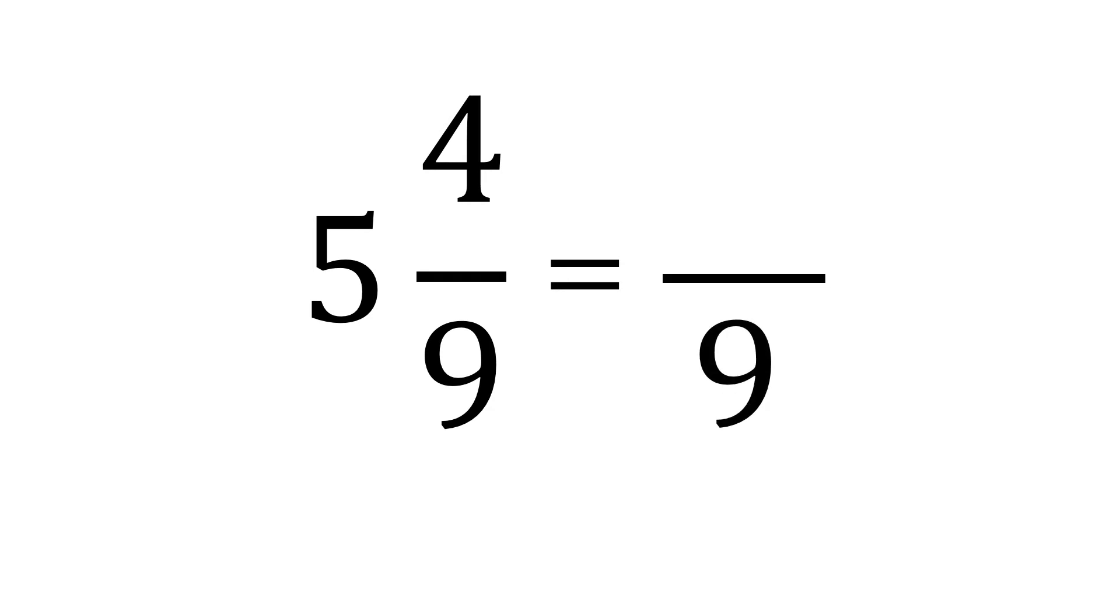Another one, 5 and 4 ninths. So this is equal to, copy the denominator, 9, and then solve for the numerator. 9 times 5 is 45, plus 4, it will be 49. So 5 and 4 ninths is equal to 49 over 9.